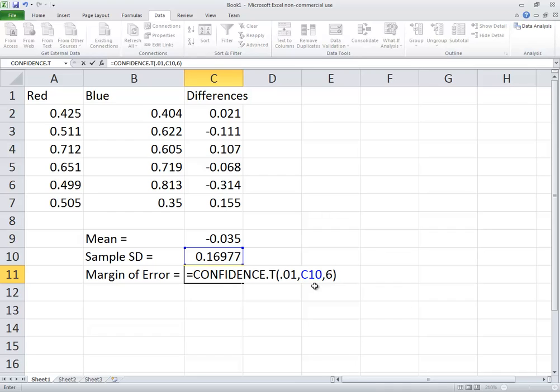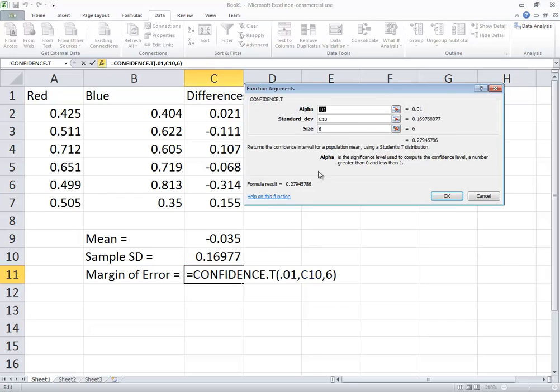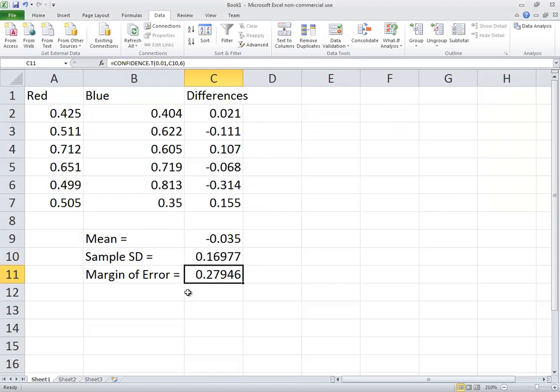You can also use the function option up here if you like a little bit more user friendly look. If you do that, then it'll give you maybe some more information about what should be there and so forth, and even a help on this function if you wanted. Click OK. It gives me my margin of error.